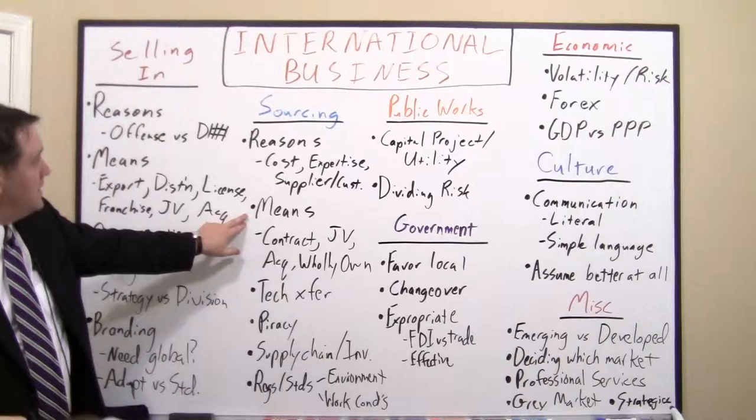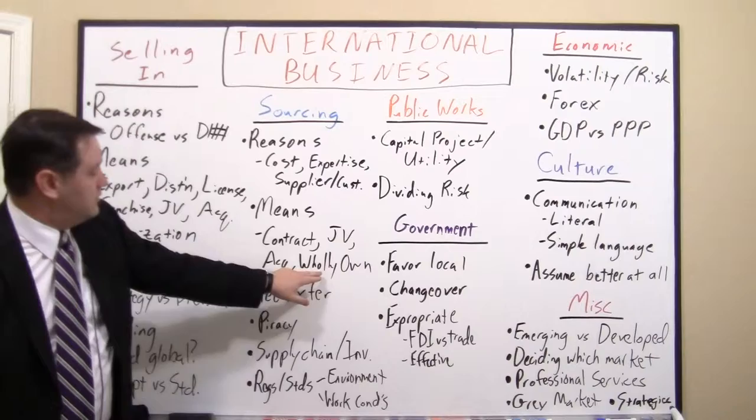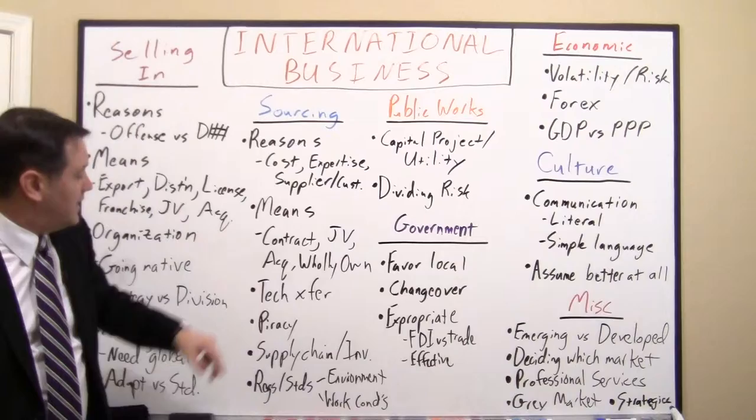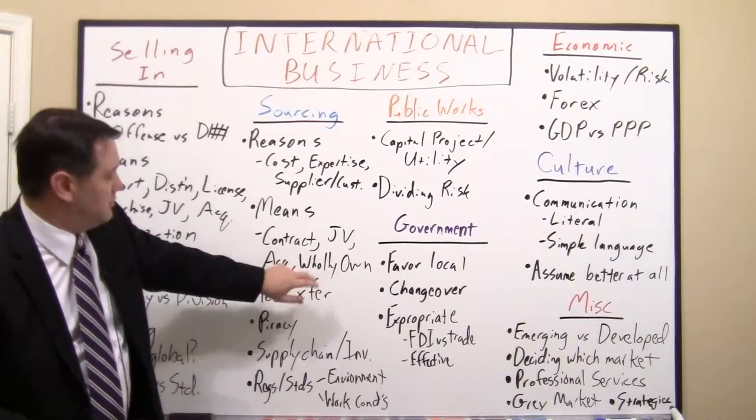The means of going into another country to source are analogous to when you're selling in. You can do a wholly owned company or factory, buy it and own it yourself. You can also do contract manufacturing or supplying, or again do a joint venture or make an acquisition of a local player. Remember, don't assume you have to do everything wholly owned yourself — there are a lot of options.